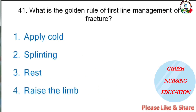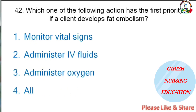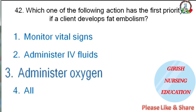What is the golden rule of first-line management of fracture — apply cold, splinting, rest, or raise the limb? The correct answer is rest. Which action has first priority if a client develops fat embolism — monitor vital signs, administer IV fluids, administer oxygen, or all of the above? The correct answer is administer oxygen.